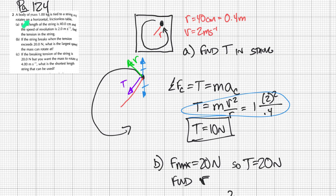Okay, so question two says a body of mass one kilogram is tied to a string and rotates on a horizontal frictionless table. So imagine this is kind of your bird's eye view of this object here. It's going to rotate whether it's clockwise or counterclockwise, it doesn't really matter. My radius is four centimeters, which I need to convert that into meters, so that's 0.4.